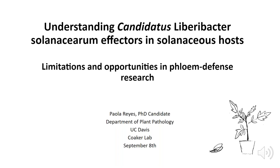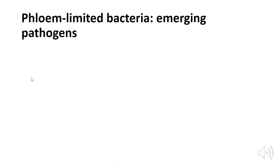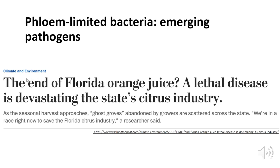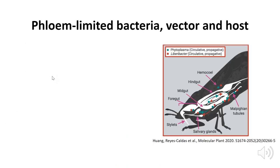A lot of emerging pathogens have arisen as devastating crop pathogens. Just to give you an example, the whole citrus industry in Florida has been decimated by the Huanglongbing disease, also known as HLB or citrus greening. Plant pathogenic phloem-limited bacteria are actual threats for food security. Because we don't know enough about the interaction with the host, we are not able to deploy efficient management in the field. On top of that, phloem-limited bacteria are vectored by insects, and we know insect movement is increasing with climate change.